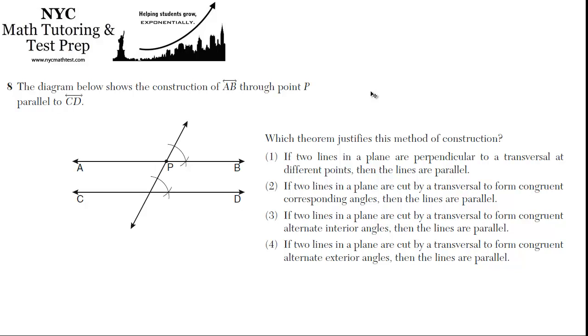Before we read these answer choices, let's just understand what it is they're doing in this picture, what it is that they're constructing. So it says it's the construction of AB through point P parallel to CD.